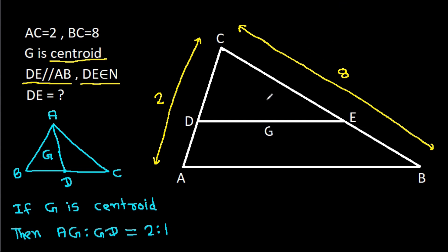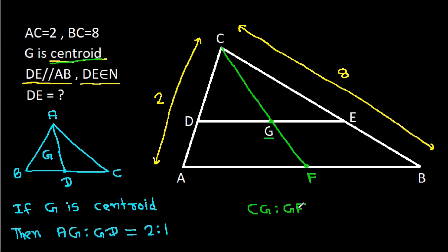Here, suppose this point is F. We know that G is the centroid, so CG to GF will be equal to 2:1. That means if CG is 2x, then GF will be x.